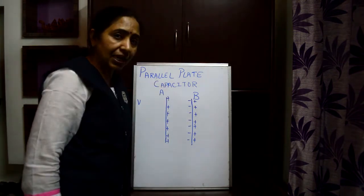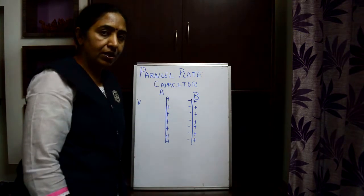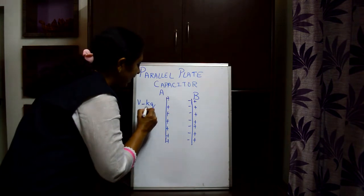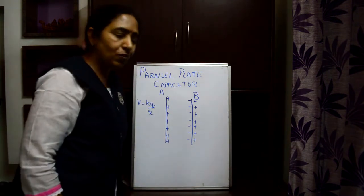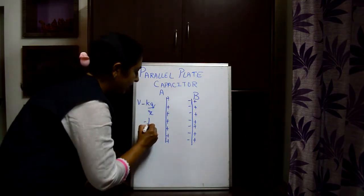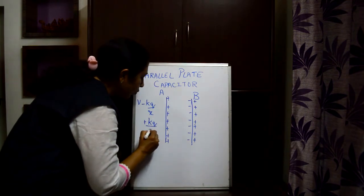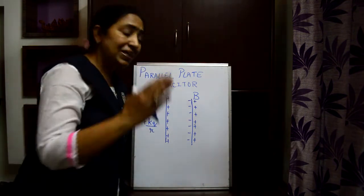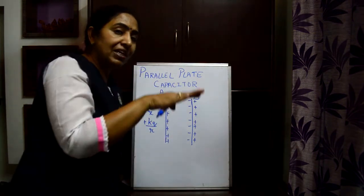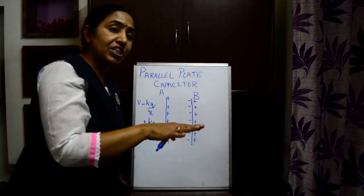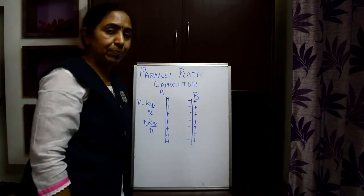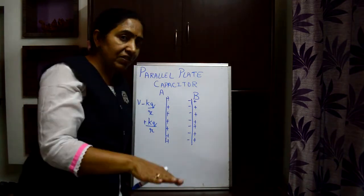Because of this negative charge the potential will reduce — it will reduce by a factor of minus KQ by R. And because of the positive charge the potential will increase by a factor of KQ by R. But since the negative charge is more close to plate A, the potential will decrease. As a result, the net potential will decrease.